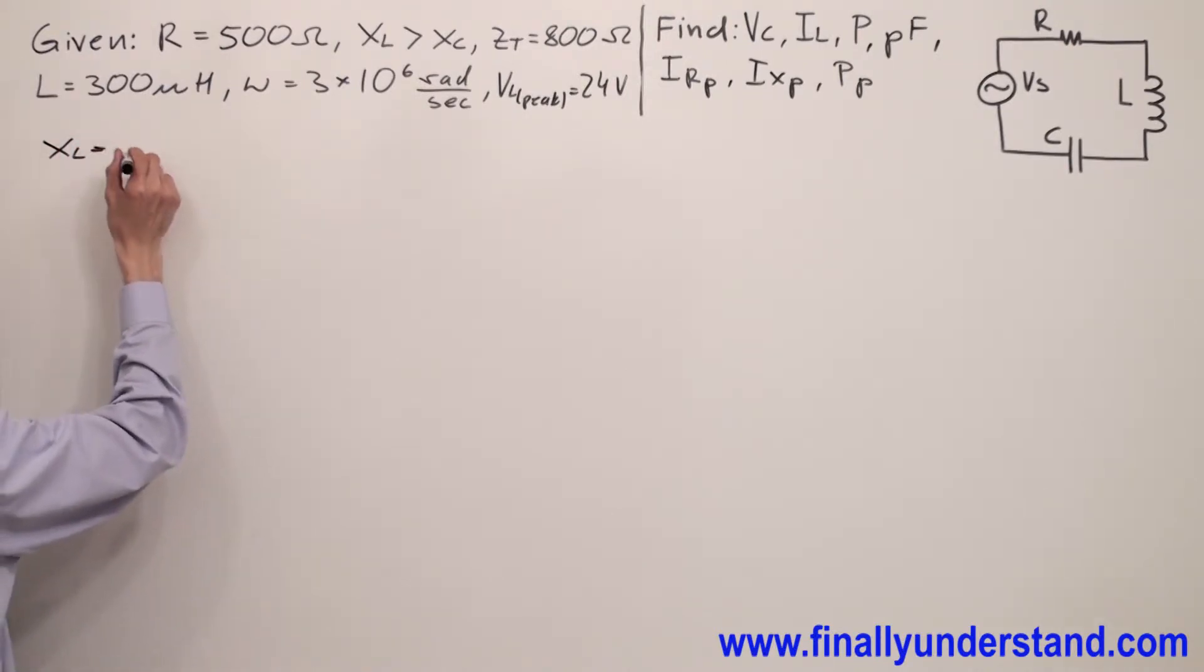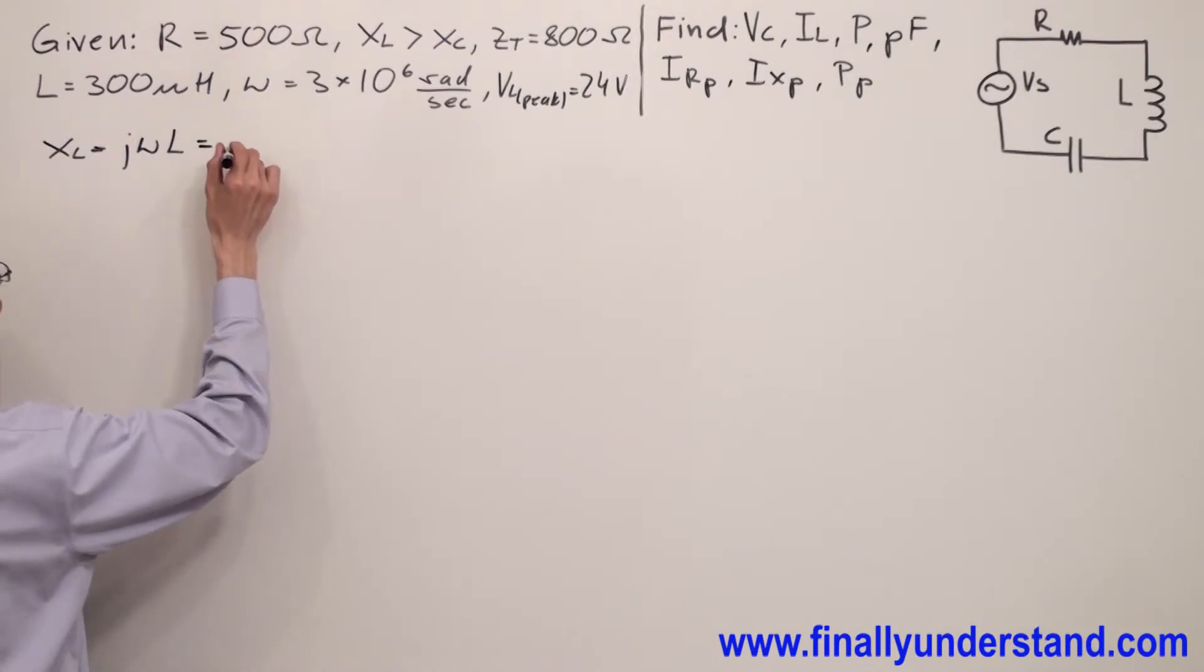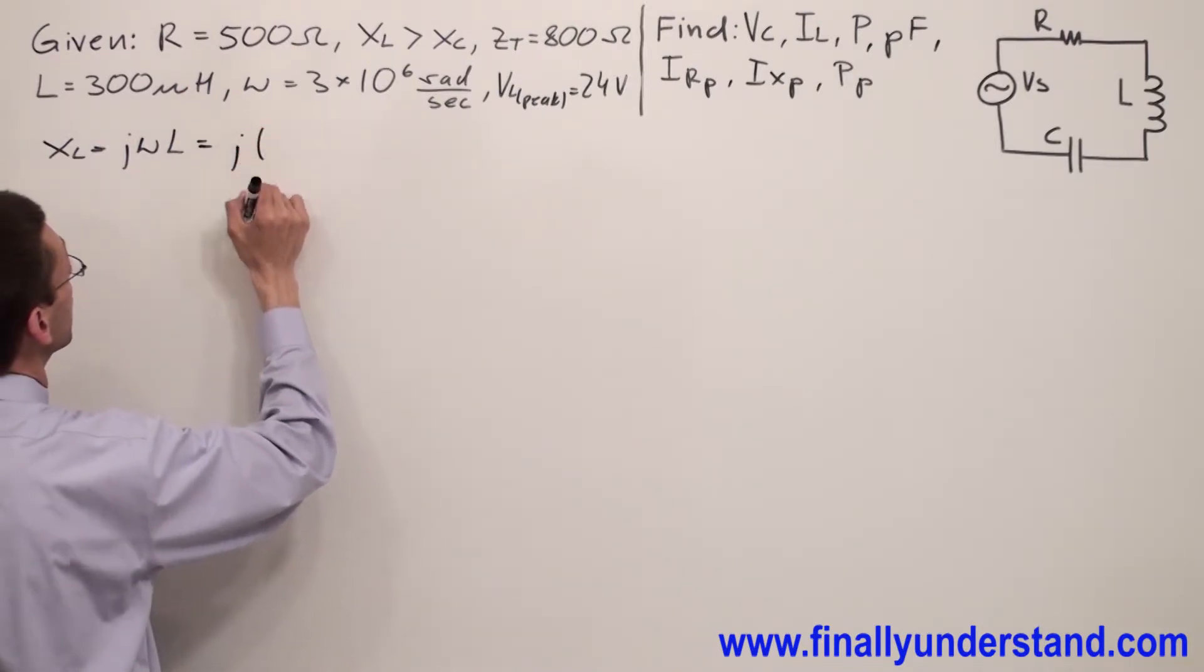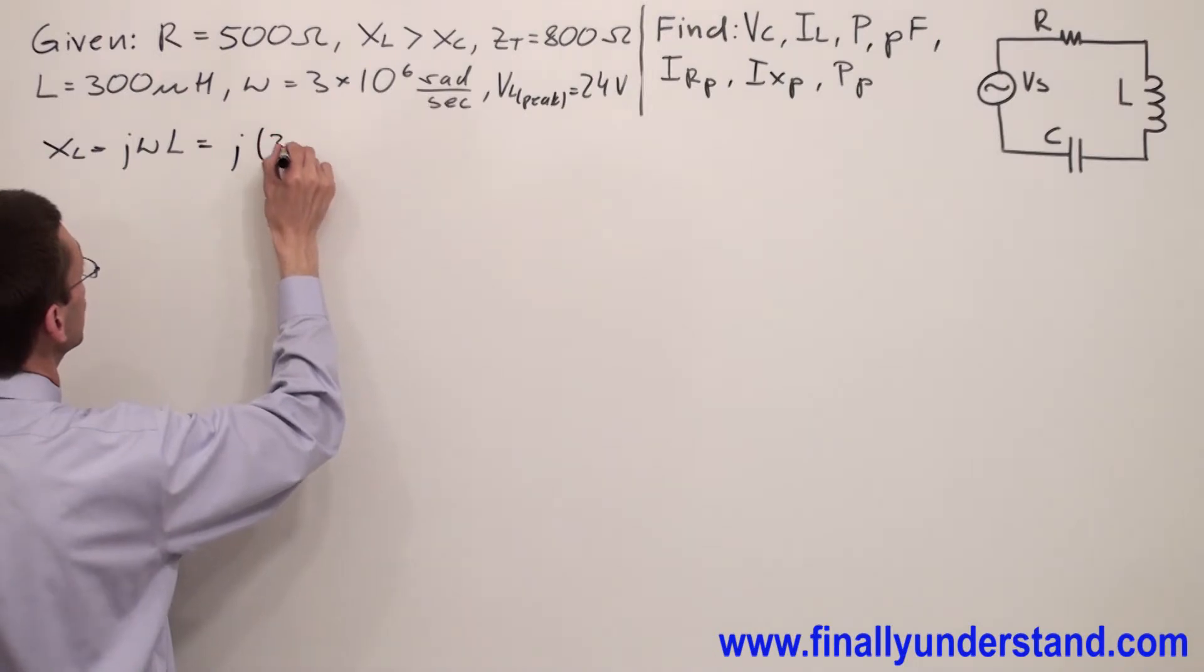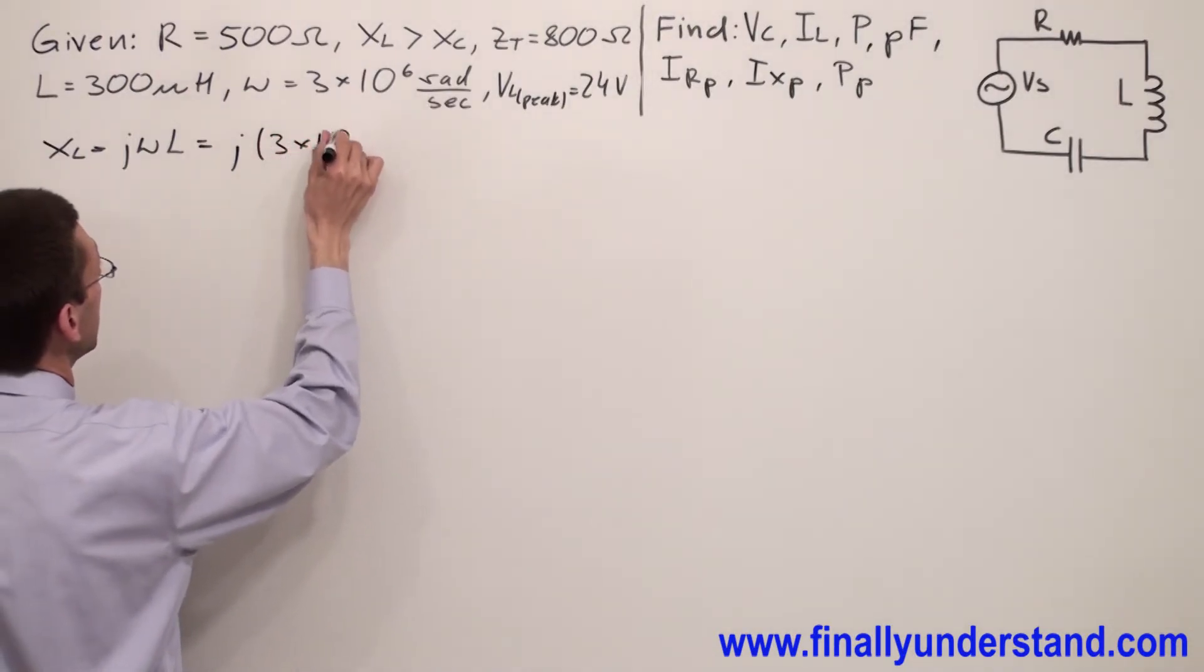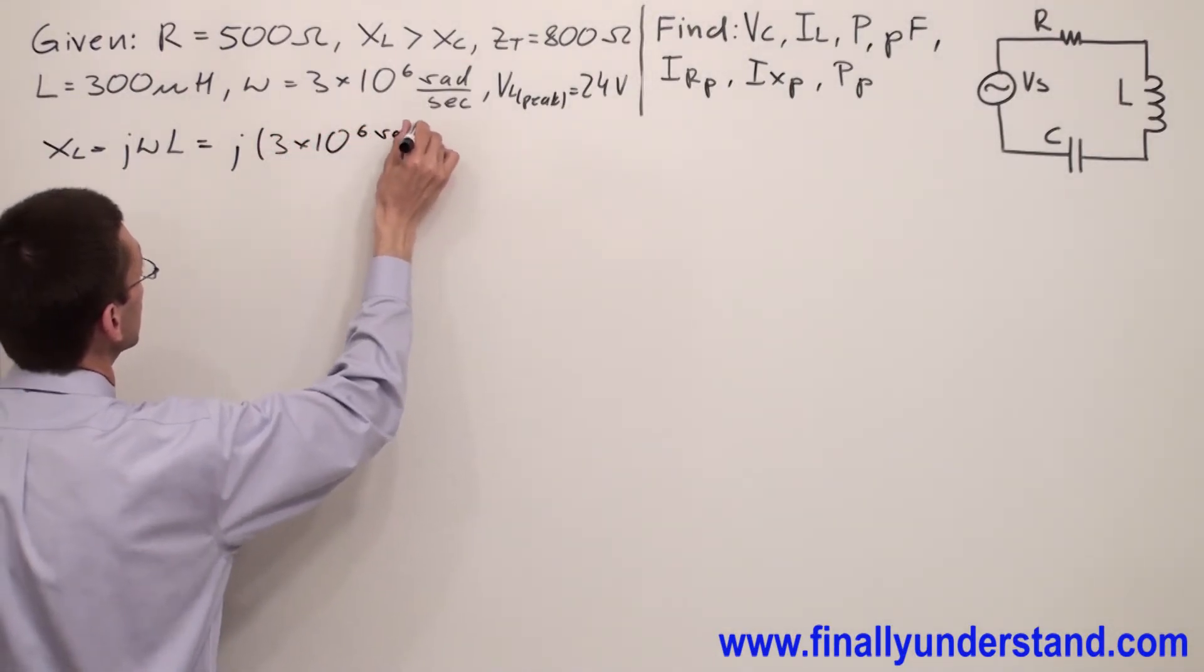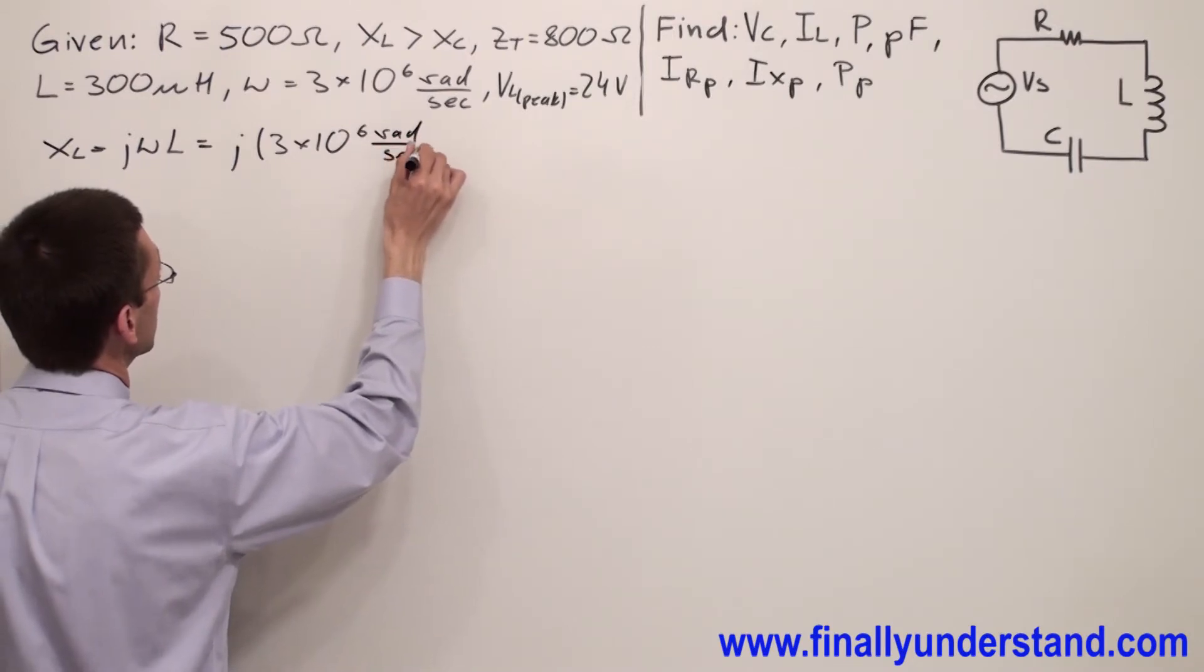X_L is equal to jωL, so I have j times omega. Omega is equal to 3 times 10 to the 6 radians per second.